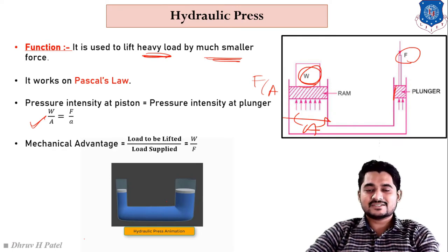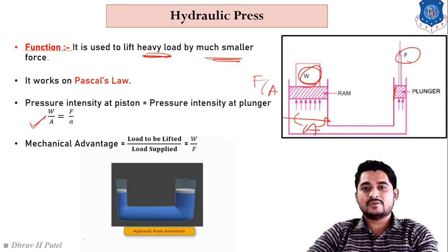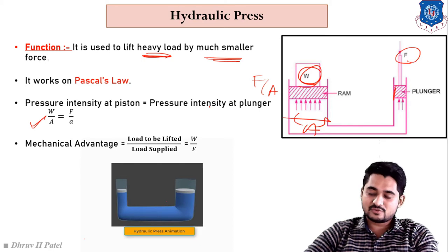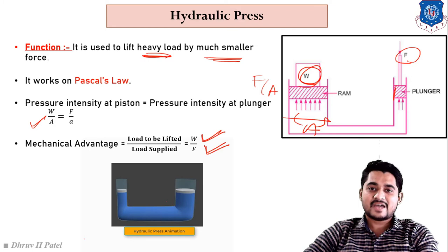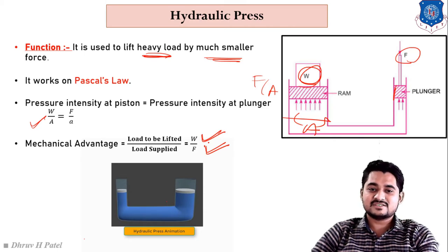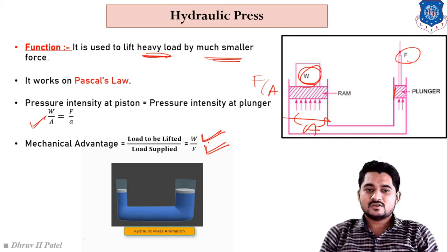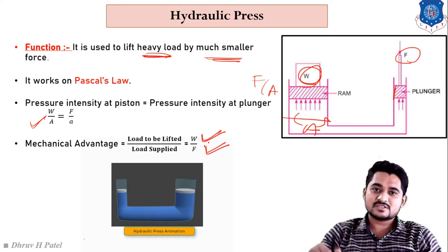Mechanical advantage means load to be lifted divided by effort supplied. From this sketch, load to be lifted is W and effort supplied is F, so mechanical advantage equals W/F. This is our first basic hydraulic machine — the hydraulic press — which lifts heavy loads by the application of smaller forces.